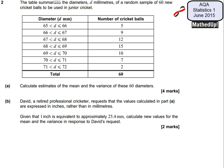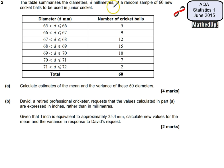This is question 2 from the Statistics 1 June 2015 exam paper. In this question we've got a table that summarises the diameters of a random sample of 60 new cricket balls to be used in junior cricket. We've got the data here in this grouped frequency table, and part A requires us to calculate estimates of the mean and the variance of these 60 diameters.